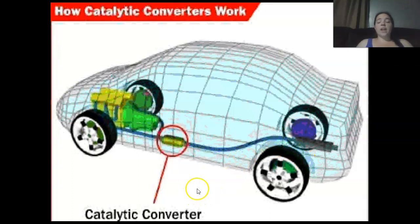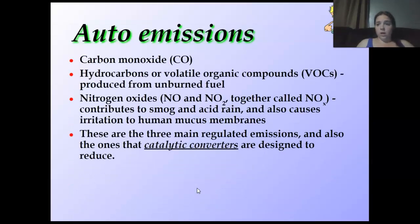One thing is a Cadillac converter, something you may have heard about in automobiles. What do automobiles give off? Carbon monoxide, not so good. Hydrocarbons, volatile organic compounds, VOCs, produced by unburnt fuel. Nitrogen oxides, NO, NO2, together called NOx. It contributes to smog, acid rain, causes irritation to human mucus membranes. We want to lower that. We don't want that as much. There are three main regulated emissions, also ones that Cadillac converters are designed to reduce. We don't want these.